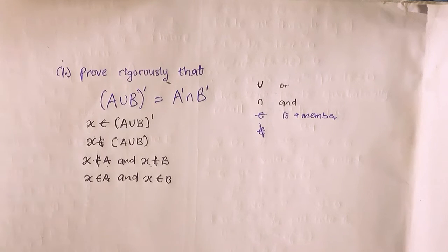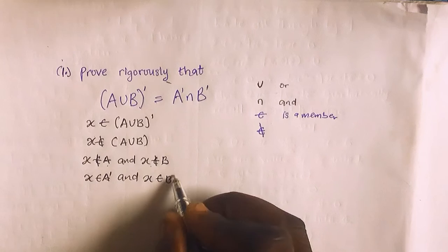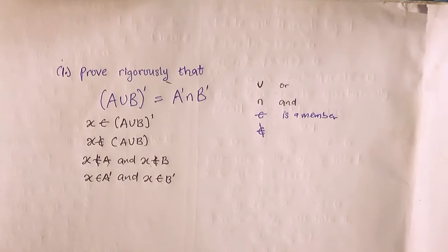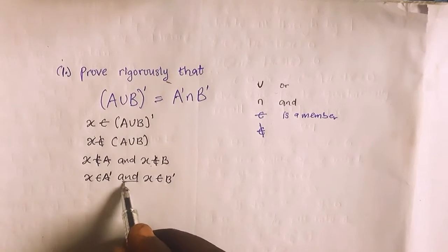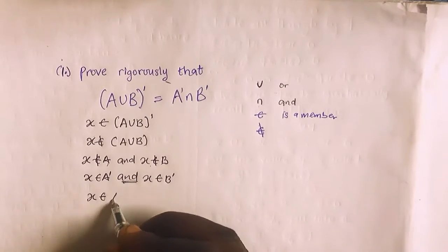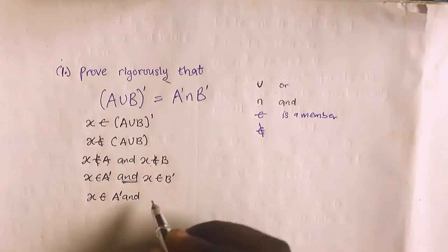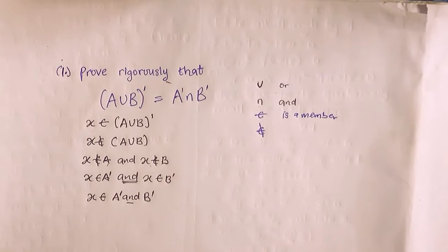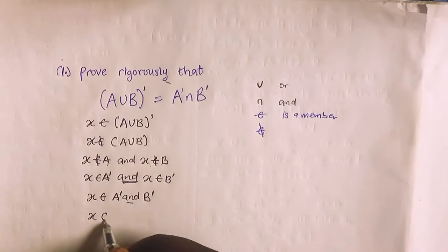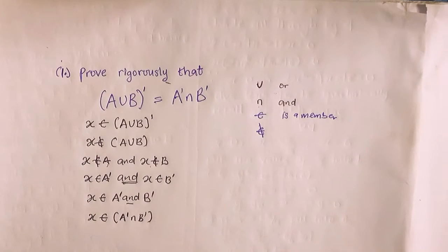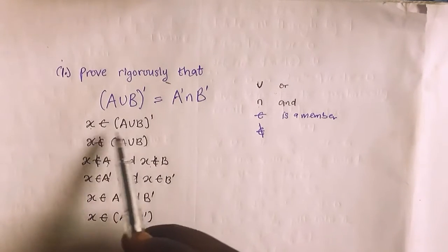Since x is not a member of A and x is not a member of B, that means x is a member of A complement and x is a member of B complement. And as I told you, 'and' means intersection. So I can say x is a member of A complement intersection B complement. So I've already proved that x being a member of (A union B) complement implies x is a member of A complement intersection B complement.